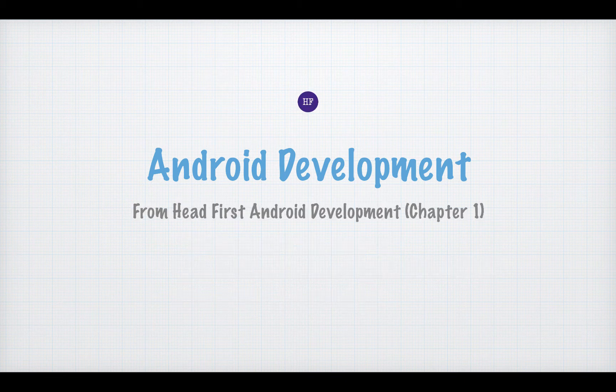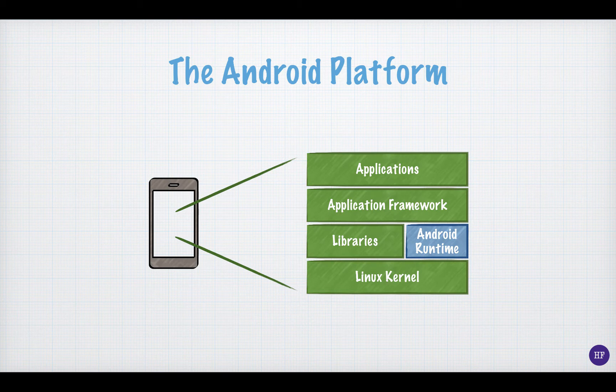We'll start with some basic information about Android development from the first chapter of Head First Android Development. The Android platform, like most operating systems, has a layered architecture. The Linux kernel is at the core of the system. Then come low-level libraries and the Android runtime, then the application framework, which are APIs you can use to build your Android application. Then come the applications themselves, which is what the user interacts with when they use the device.